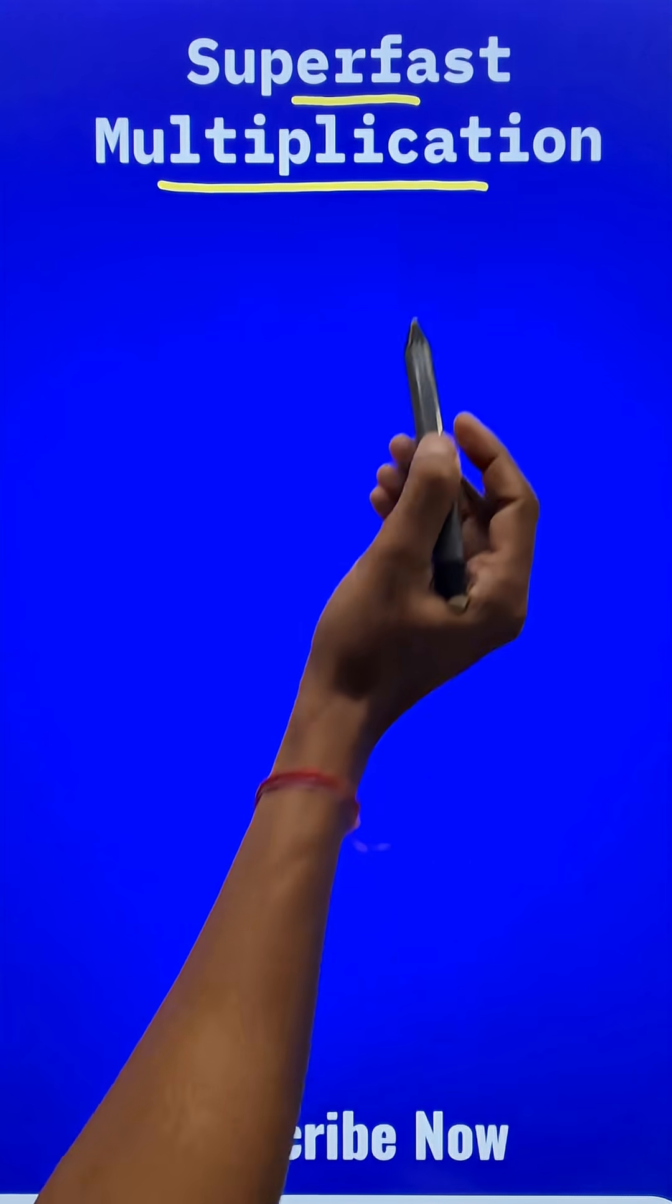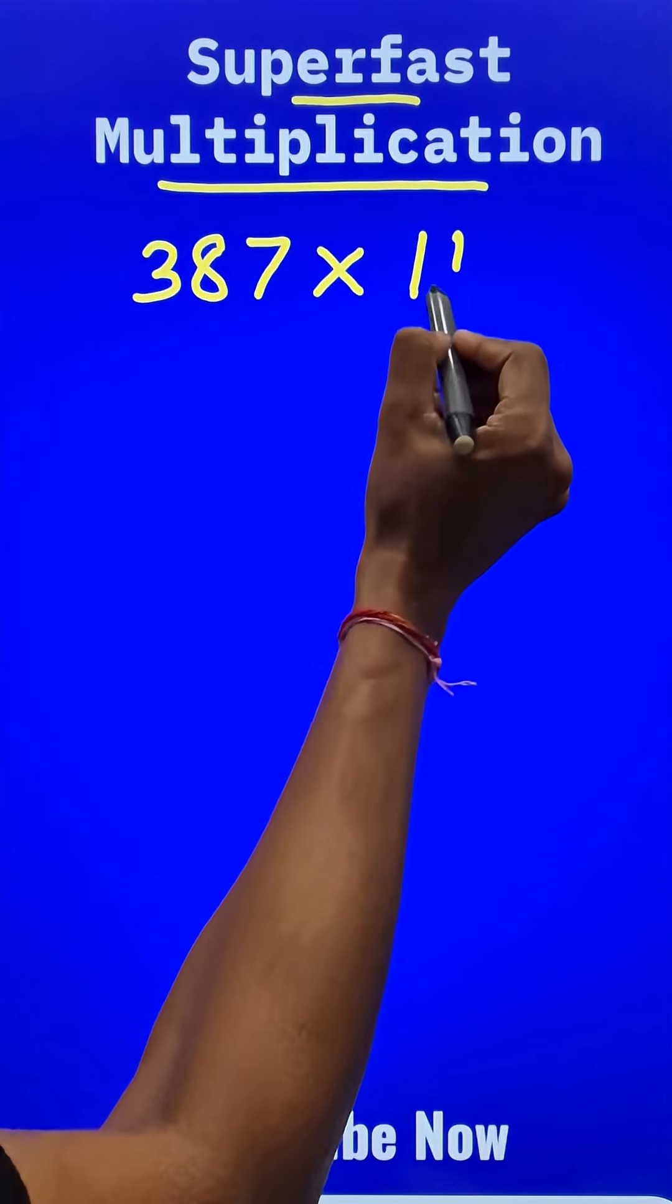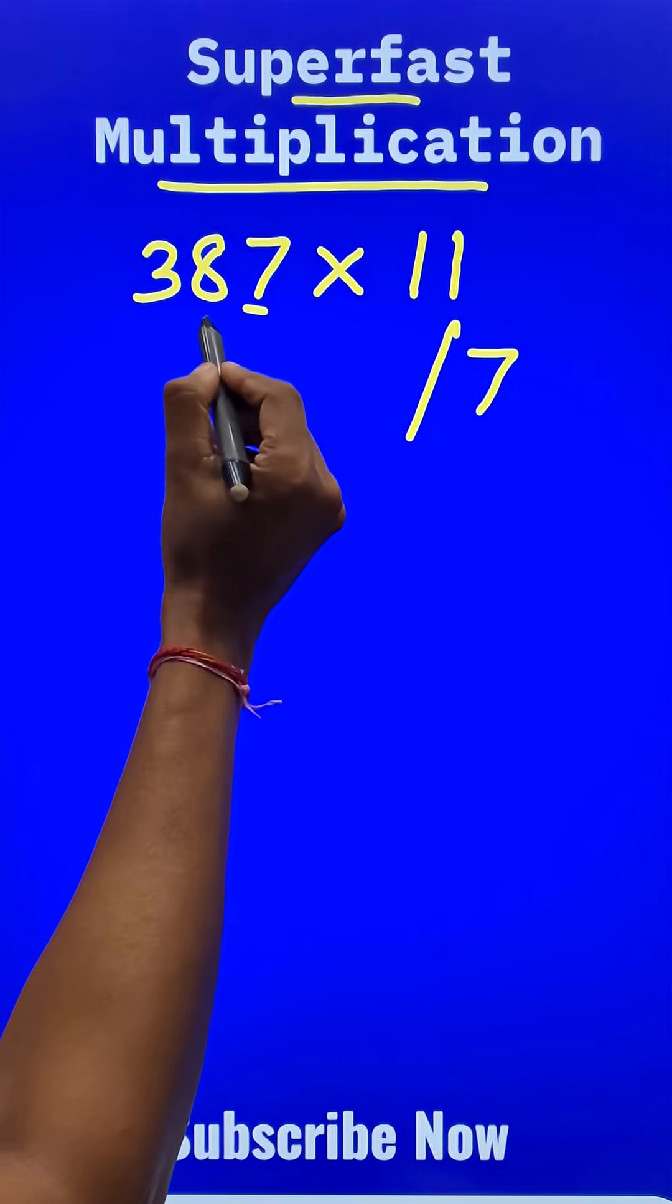Here is a super fast multiplication short trick. Suppose you have to do 387 times 11. Start from the unit digit 7 and then keep on adding the pairs.